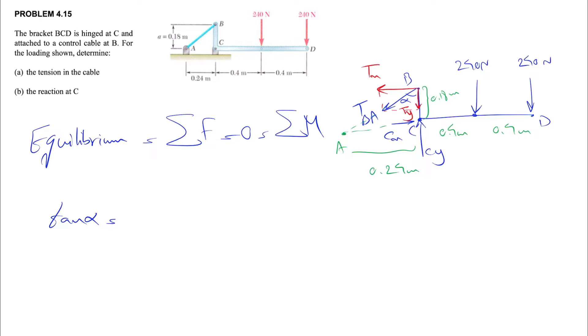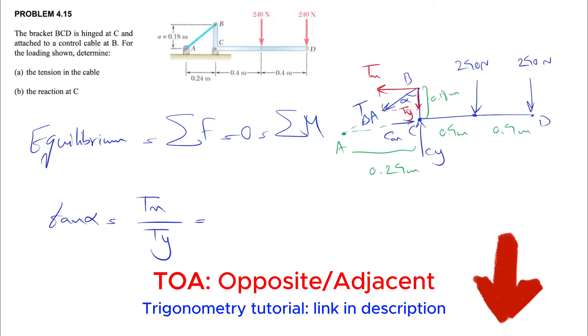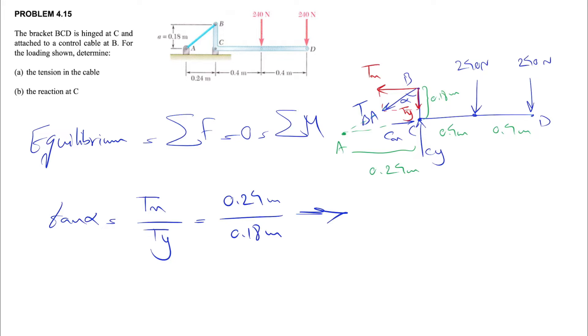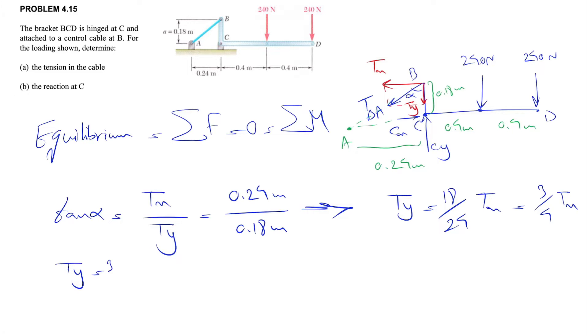What we need to find is the relationship between Tx and Ty. We have all the distances in here. Let's call this angle alpha. If we want to find the tangent of alpha, we'll have opposite which is Tx over Ty, and also we have the distances for alpha which will be 0.24 and 0.18 meter for the adjacent side. Based on this we can find the relationship, so Ty equals 18 over 24 Tx, or 3 over 4 Tx.